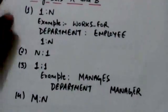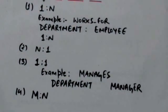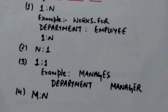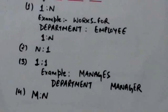Second is N to 1. In this case, an entity in A is associated with at most one entity in B, and an entity in B can be associated with any number of entities in A.